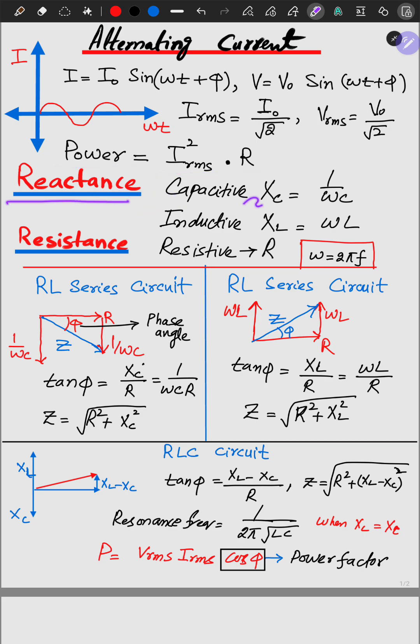In the reactances, we have capacitive reactance 1 over omega C, inductive reactance which is equal to omega L, and omega is actually 2 pi F, while in the case of resistance we have only R.